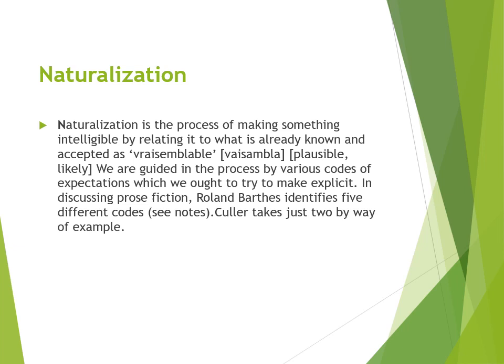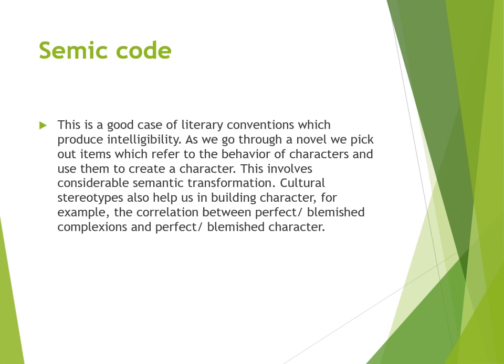Naturalization is the process of making something intelligible by relating it to what is already known and accepted. In discussing prose fiction, Roland Barthes identifies five different codes. Culler takes just two by way of example: the semic code and the symbolic code. The semic code is the unit of signifier which creates or suggests connotation. This is a good case of literary conventions which produce intelligibility. As we go through a novel, we pick out items which refer to the behaviour of characters and use them to create a character. This involves considerably semantic transformation.